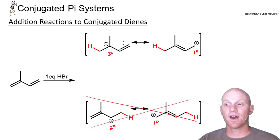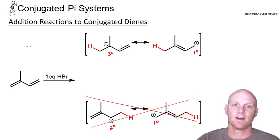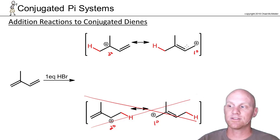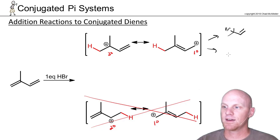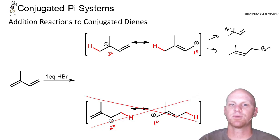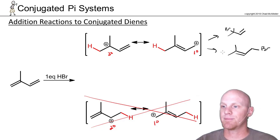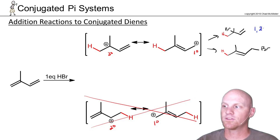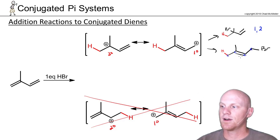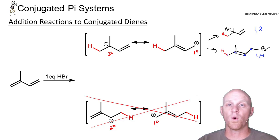Out of the four possible carbocations, we've reduced it to the most stable one. Bromine can attack either of the two carbons sharing the positive charge, giving two possible products. When H and Br add to two adjacent carbons, we call that the 1,2-product — the result of 1,2-addition. When they are four carbons apart, we call it the 1,4-product — the result of 1,4-addition.